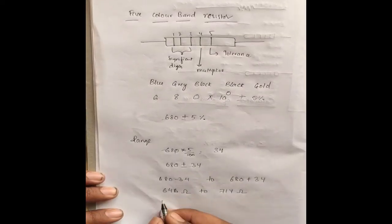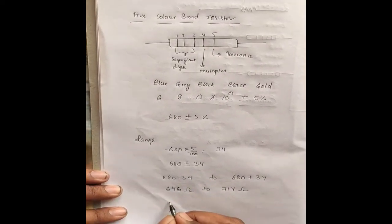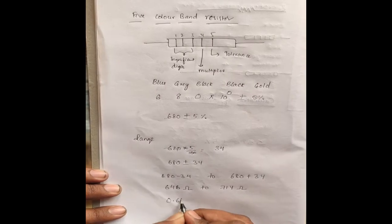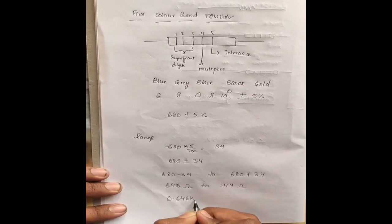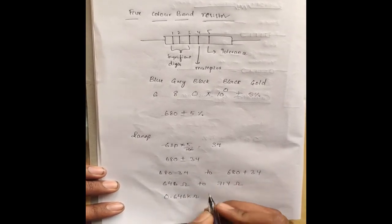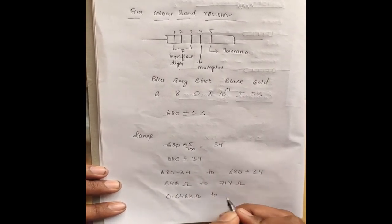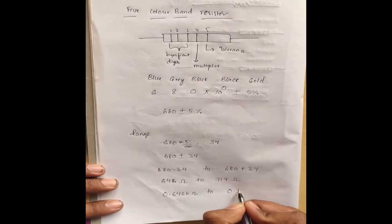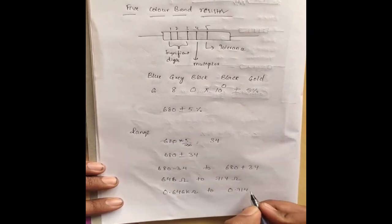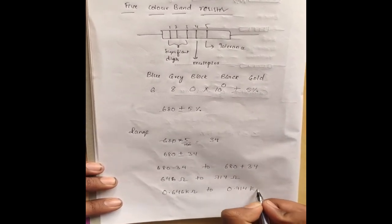This can be represented in kilo ohms as 0.646 kΩ to 0.714 kΩ.